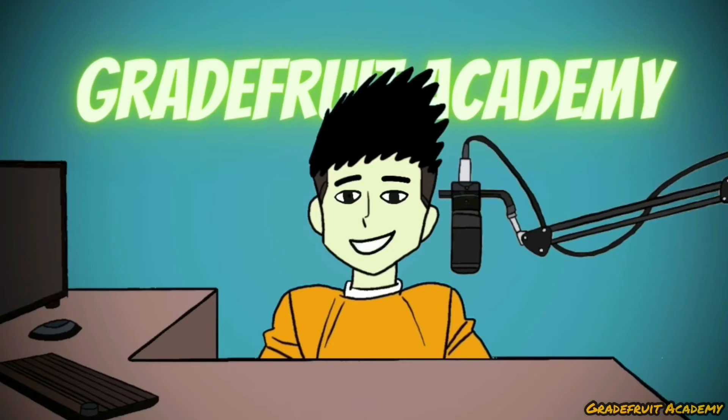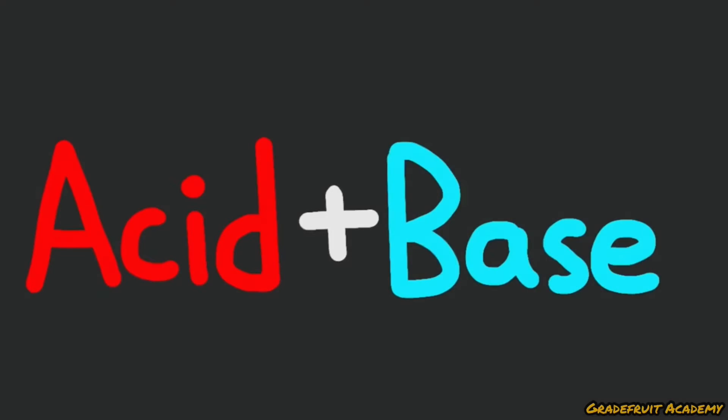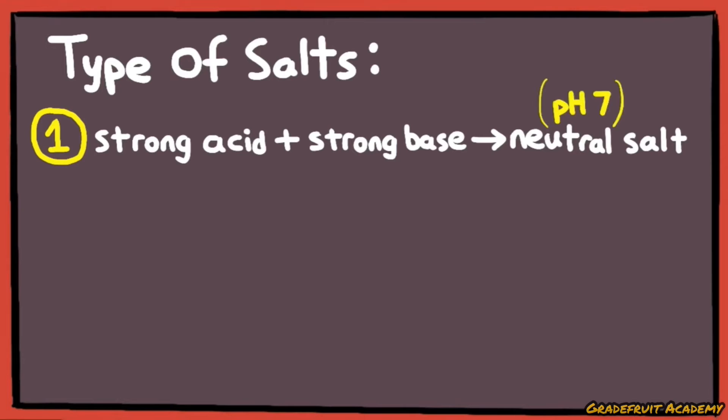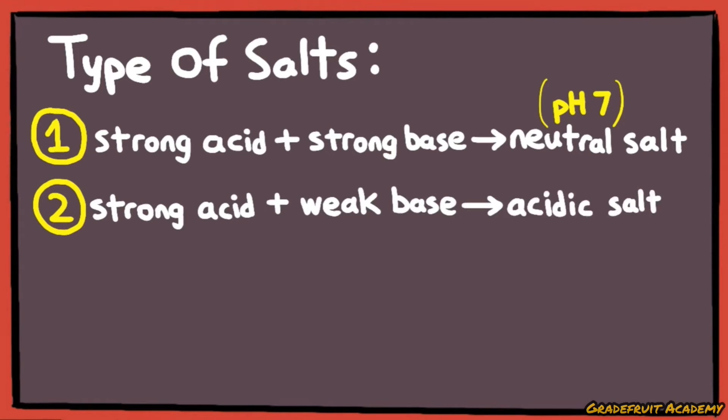So as we know, one of the byproducts of an acid-base reaction will be a salt. There are four kinds of salt that can be produced. Namely, from the neutralization between a strong acid and a strong base, which gives a neutral salt of pH 7, between a strong acid and a weak base, which gives an acidic salt,